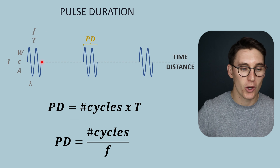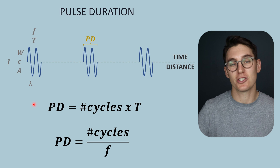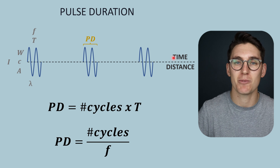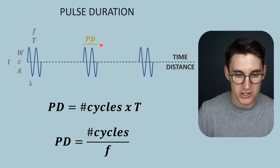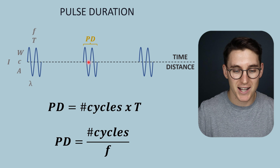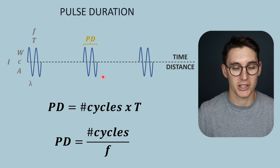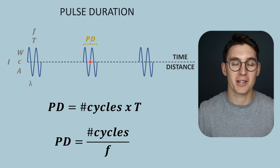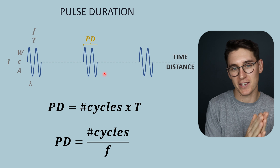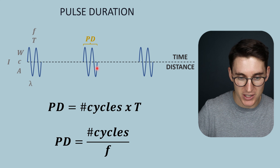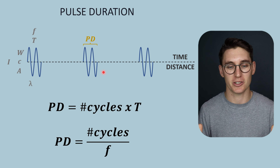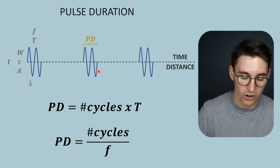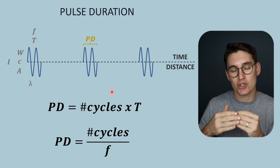Now let's look at the five different values when looking at pulse echo ultrasonography — everything above the line represents a time value and everything below represents a distance value. The first value is known as pulse duration: the time taken for an entire pulse to be emitted from our ultrasound machine. We calculate this by multiplying the number of cycles in our pulse by the period of a single cycle. Because period is inversely proportional to frequency, we can also calculate pulse duration as the number of cycles divided by frequency.